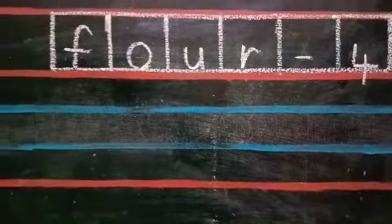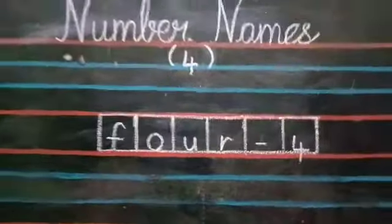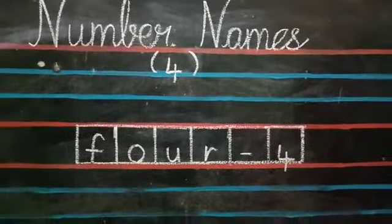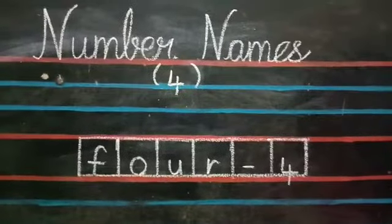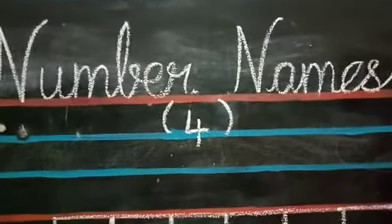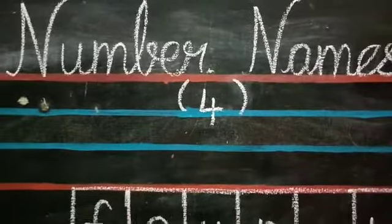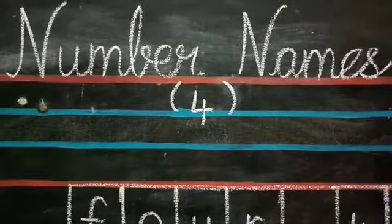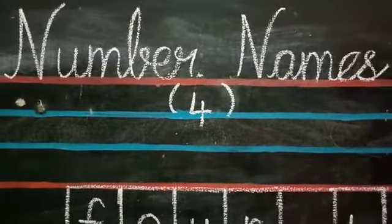Children, like this, if you say it loudly and write every day, then one day the spelling will get by-hearted. Isn't it? Now open your number work notebook and write the number name for 4 neatly. Thank you, children.